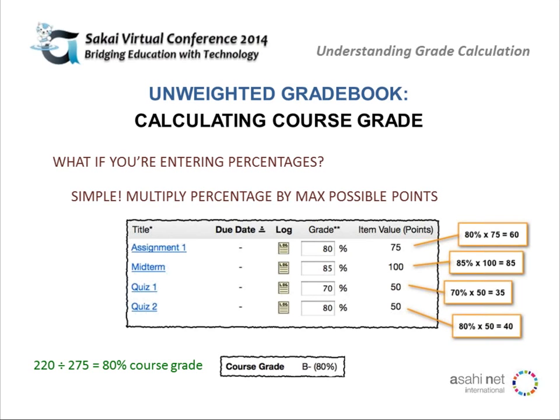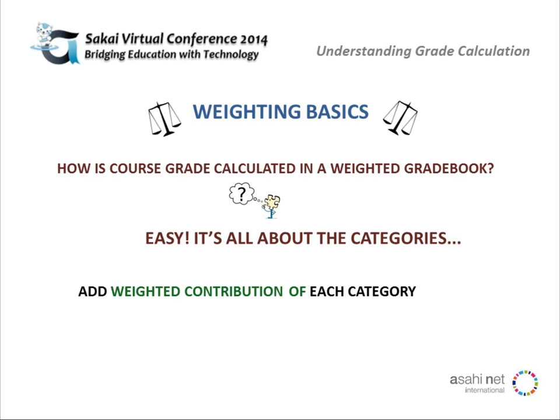You'll see a percentage because it's always going to be based on the 100% grade scale. So you'll get 0.8 if you divide these numbers, which works out to 80% on that 100-point scale. If you're entering percentages, it's still pretty basic — all you have to do is multiply the percentage you enter by the maximum possible points for each item. Whether it's points or percentages, it works out the same: it's giving you a percentage of the maximum points, and then you add them up and divide by the total maximum points.